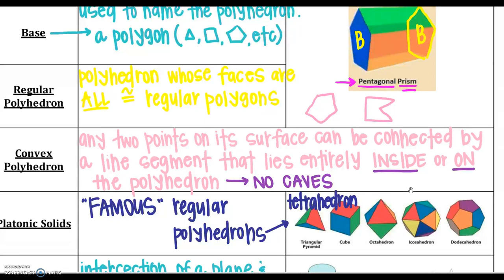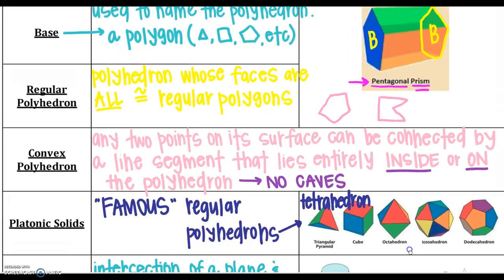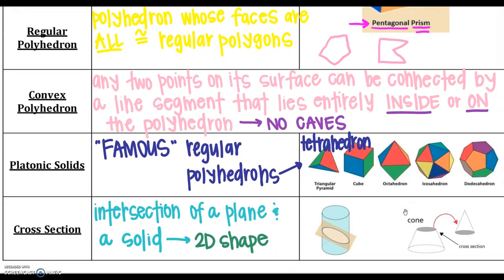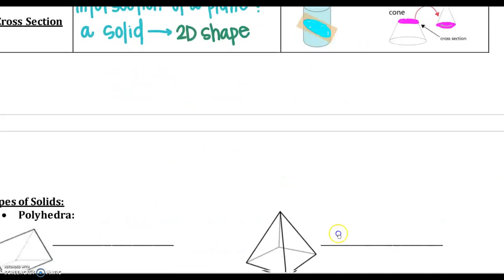Platonic solids are just five famous regular polyhedrons. We are not going to be really focusing on those, but that's just a little bit of something extra that goes with this section. And then cross sections is just the intersection of a plane and a solid. So if you would cut this cylinder diagonally, if you notice, you see an ellipse or you see an oval. It's the 2D object, so you're naming something 2D. If I cut the cone parallel to its base, I see a circle. So if it's parallel to the base, I would see the base itself, which is a circle.